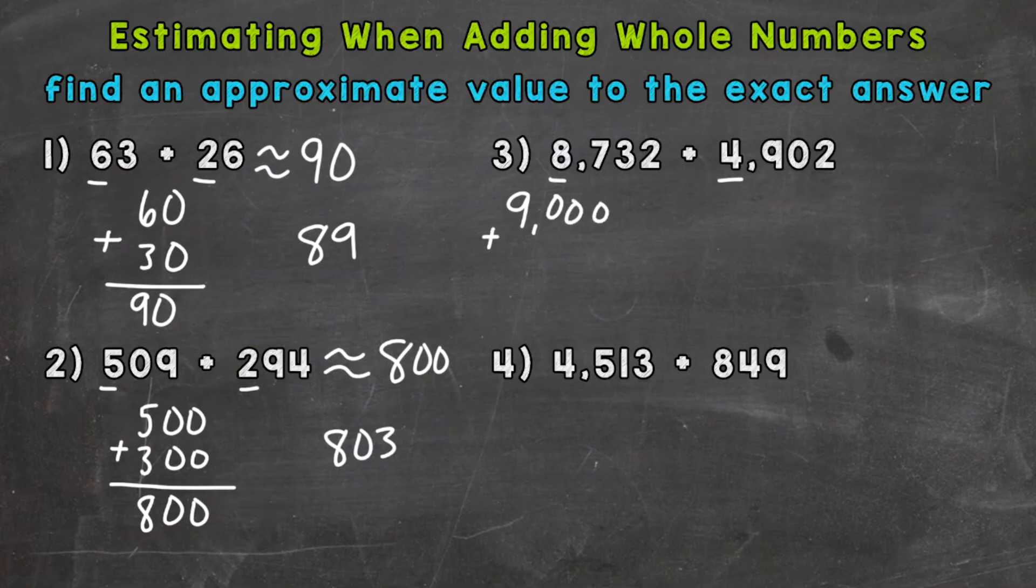4,902 would round to 5,000. So our estimate here would be 14,000.